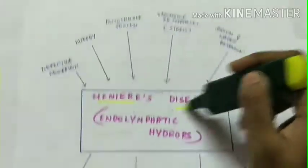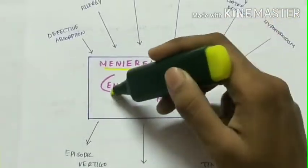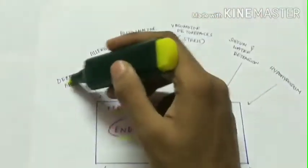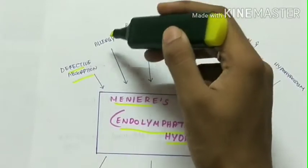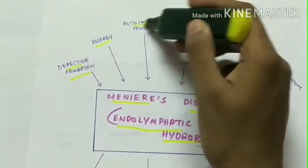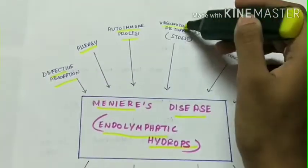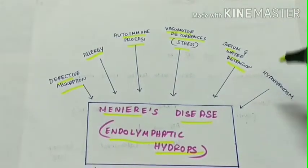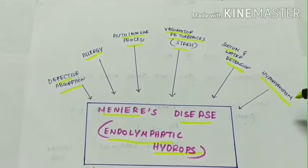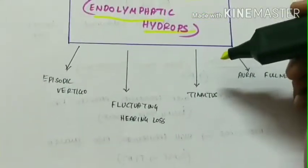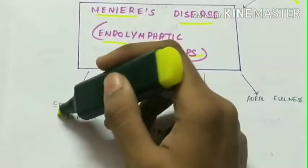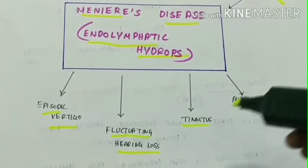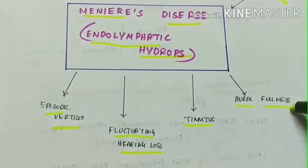Let's see Meniere's disease in a nutshell, which is also called endolymphatic hydrops. The causes are defective absorption of the endolymph, allergy, autoimmune processes, vasomotor disturbances like stress, sodium and water retention, and hypothyroidism. The clinical presentation of Meniere's disease is episodic vertigo, fluctuating hearing loss, fluctuating tinnitus, and aural fullness.